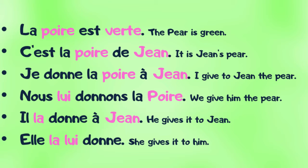You just need to change the pink words with your own elements and eventually the conjugation you are interested in to make your own phrases. You can note that the pear, la poire, is feminine and technically a direct object. So to talk about this feminine object, we will say la in French. And Jean here is the indirect object. It becomes lui.